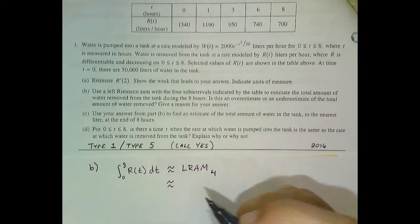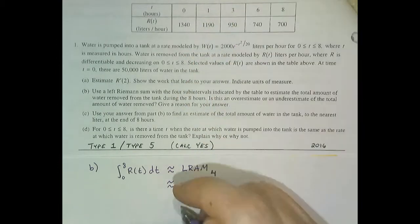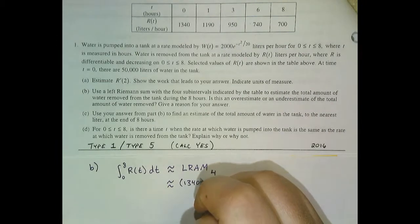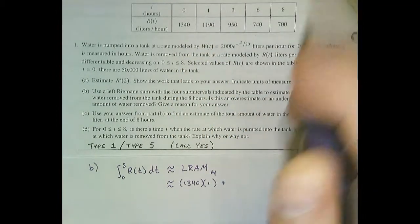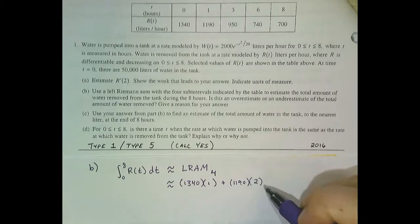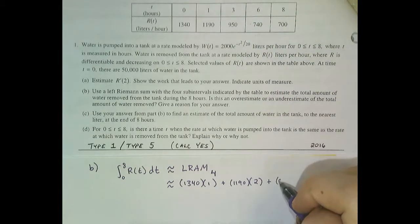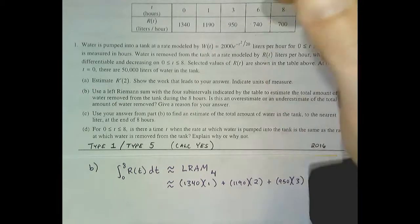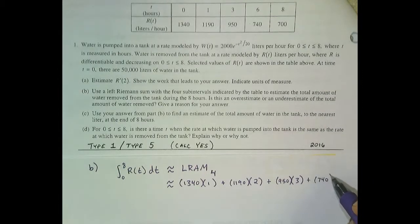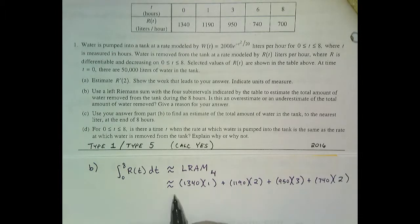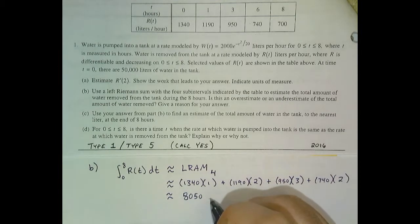The approximation is based on left-hand heights. My first rectangle from zero to one has a height of 1340 and a width of one unit. My second rectangle from one to three has a height of 1190 and a width of two units. The third rectangle has a height of 950 and a width of two units. My fourth and final rectangle has a height of 740 and a width of two units. Cleaning that out, we get approximately 8,050 liters.